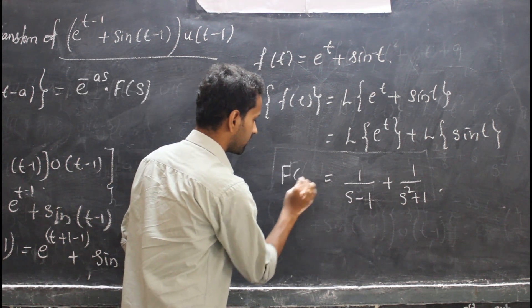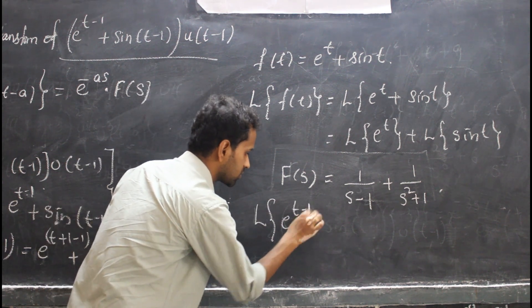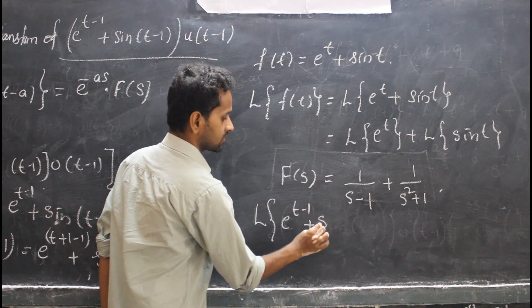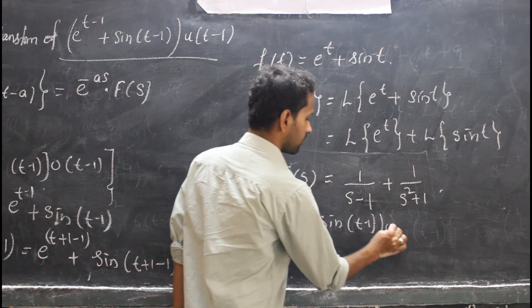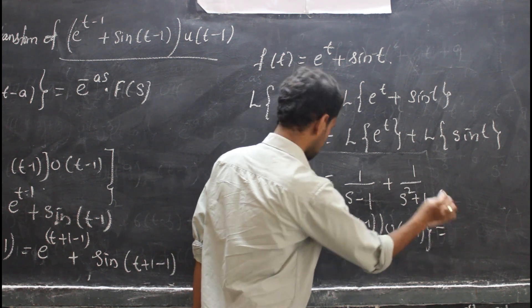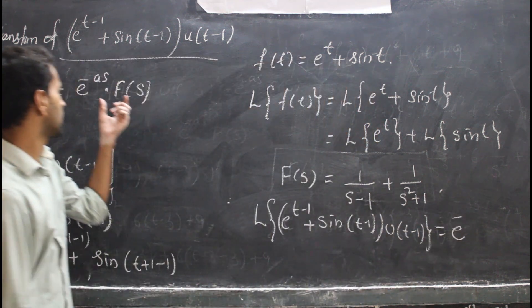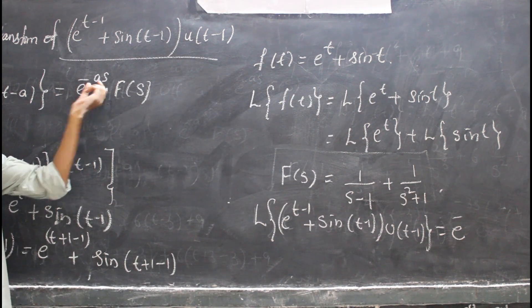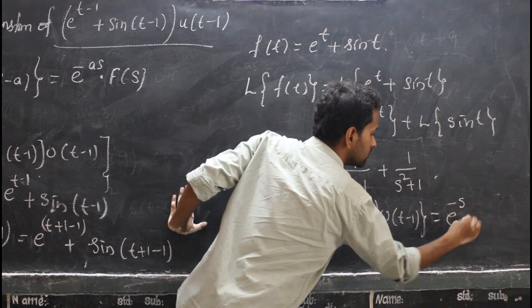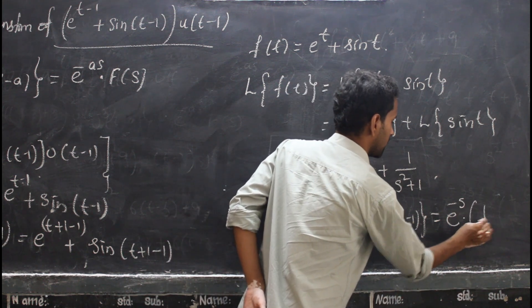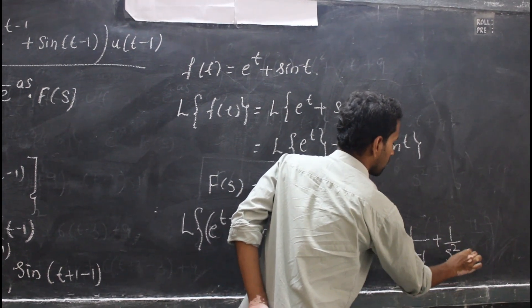Therefore, L{[e^(t−1) + sin(t − 1)]·u(t − 1)} = e^(−as)·F(s) with a = 1, giving e^(−s)·[1/(s − 1) + 1/(s² + 1)] as the final answer.